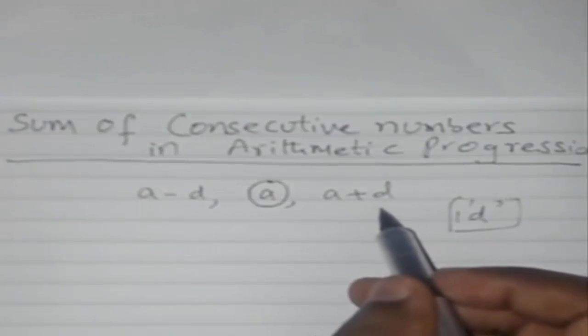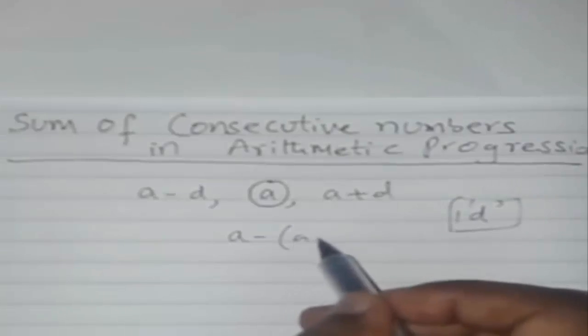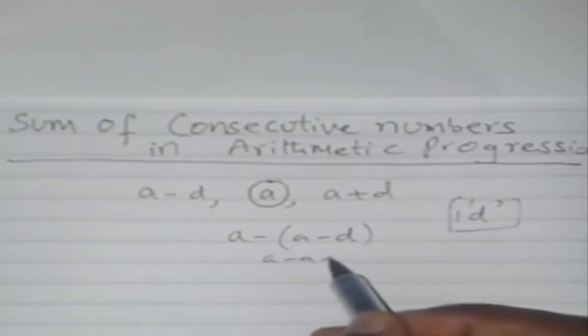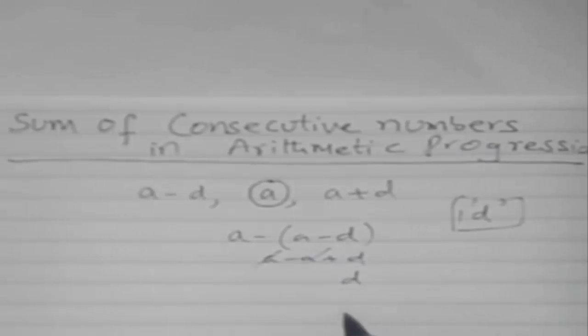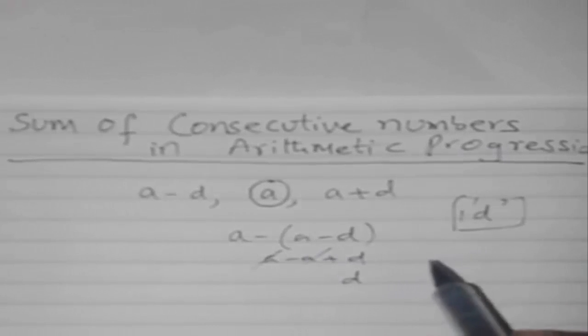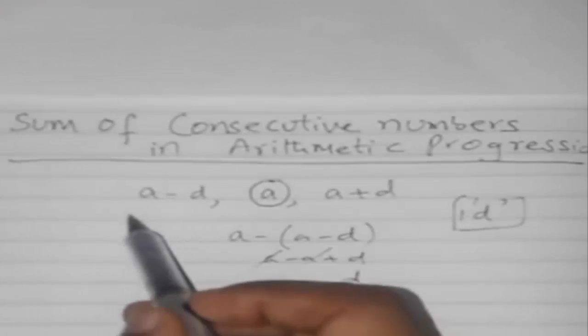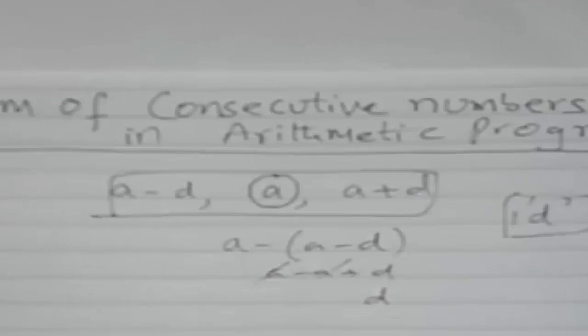If I subtract a minus (a minus d), my difference is just d. That's what I need for sum of consecutive numbers. For odd numbers, it's a minus d, a, and a plus d. And center, remember, it should be only 'a'.